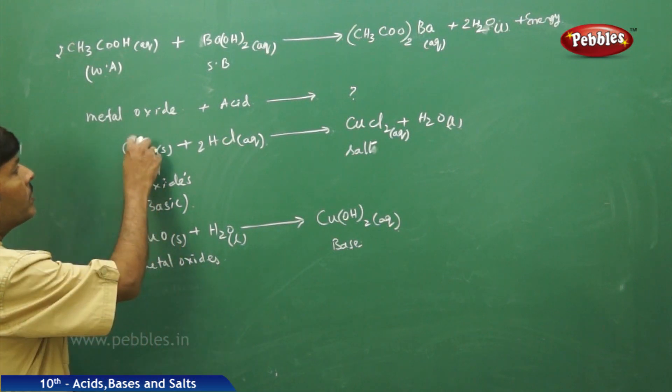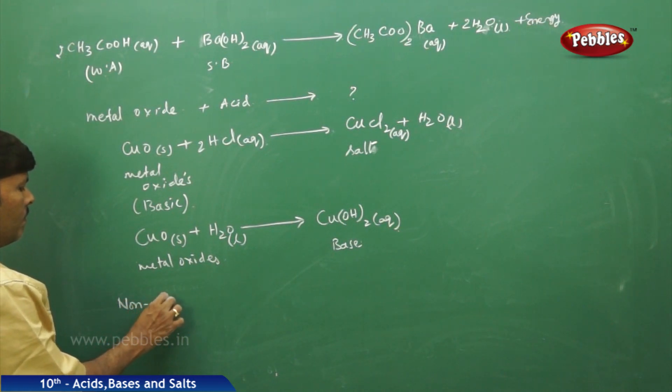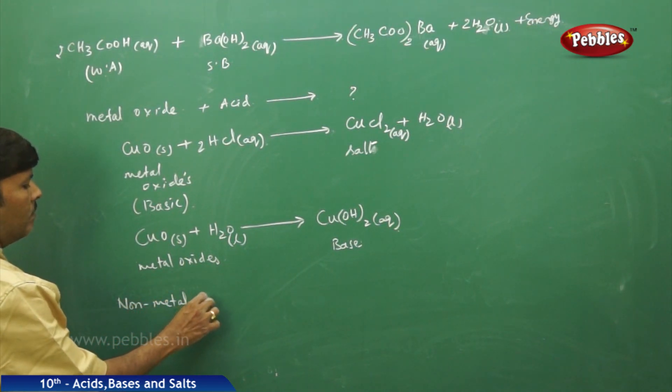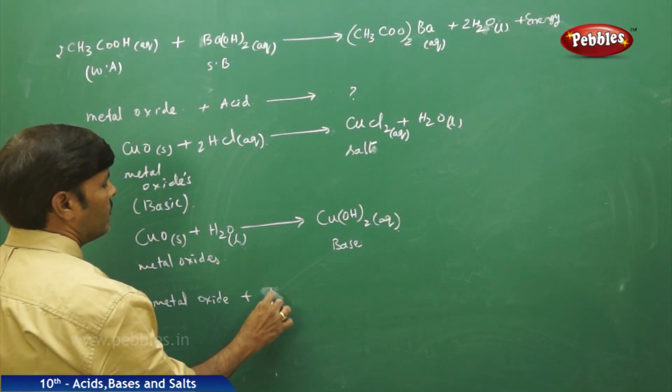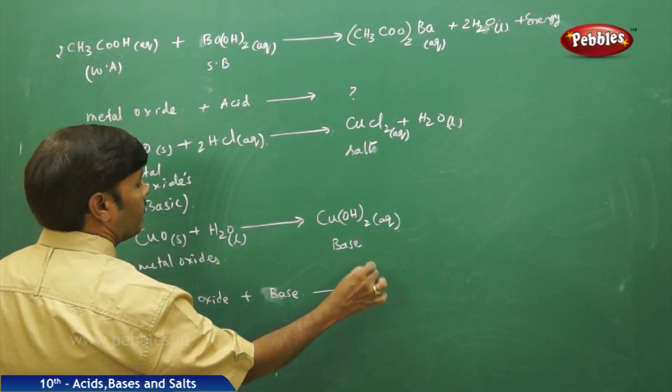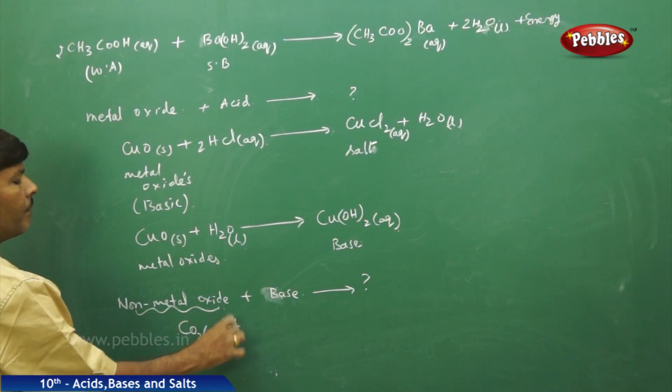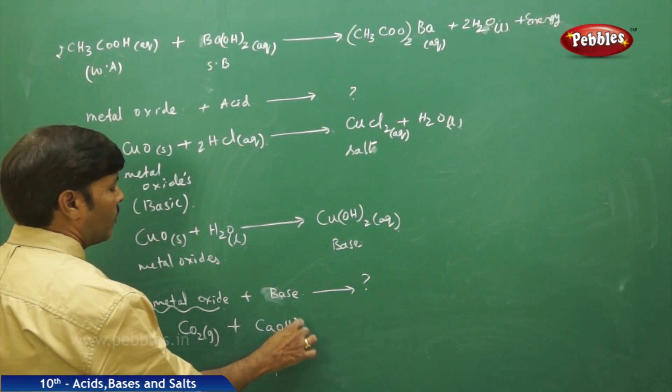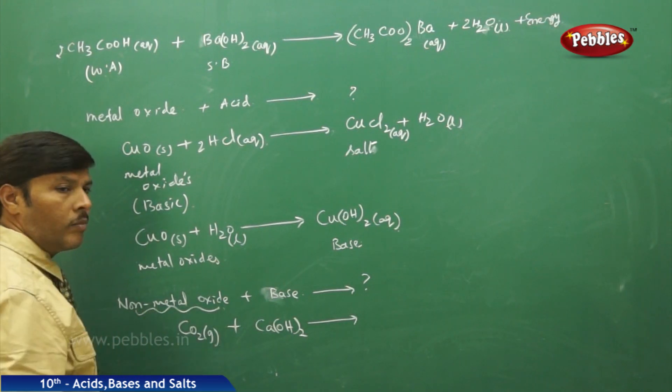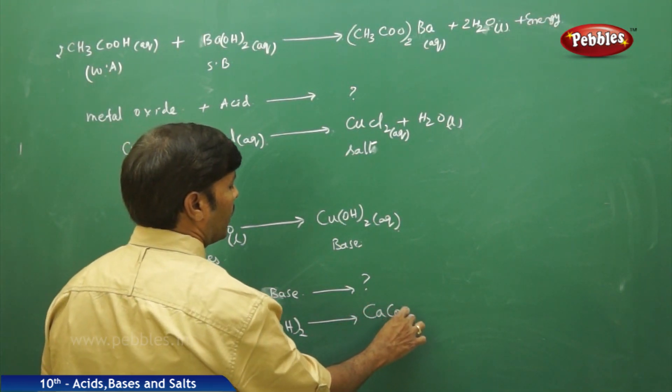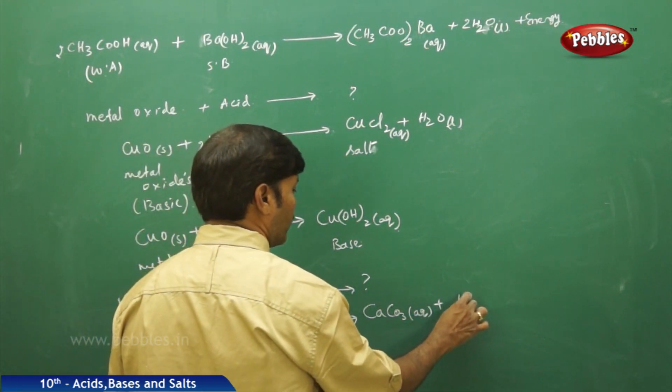Similarly, just like how a metal oxide is reacting with an acid, non-metal oxide reacts with a base. What is the product obtained? Non-metal oxide means the best example is carbon dioxide gas. If it is a base, you take calcium hydroxide. When a base reacts with a non-metal oxide, it can give salt, calcium carbonate aqueous plus H2O liquid.